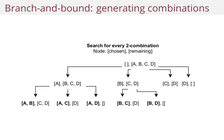The first list is a list of chosen Pokemon — on the root node this will be empty. The second list is the remaining Pokemon, and then you create children where you add elements from the remaining to the chosen.